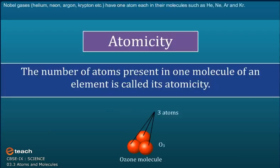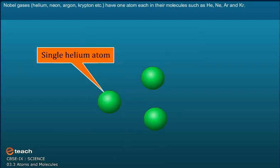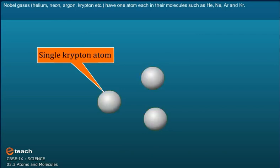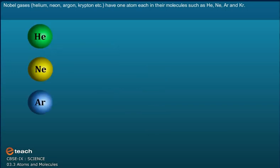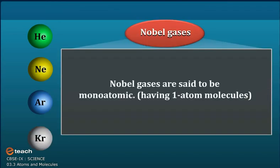The number of atoms present in one molecule of an element is called its atomicity. Noble gases — that is, helium, neon, argon, krypton, etc. — have one atom each in their molecules, such as He, Ne, Ar and Kr. So the atomicity of noble gas is one. Noble gases are said to be monoatomic, having one atom molecules.